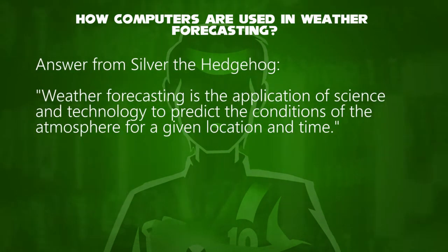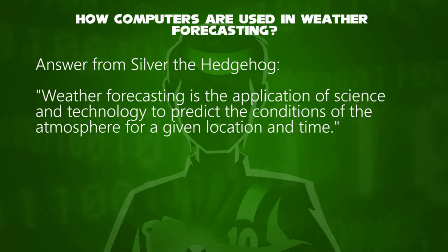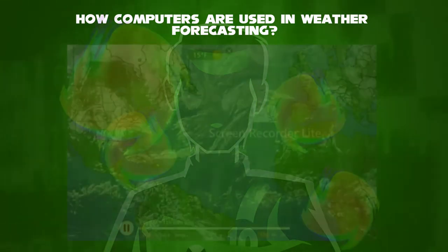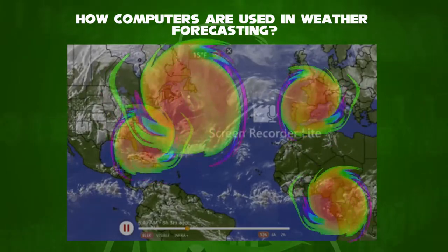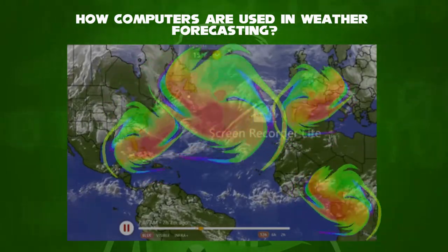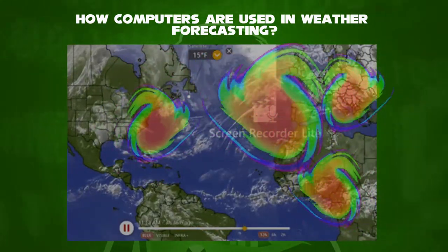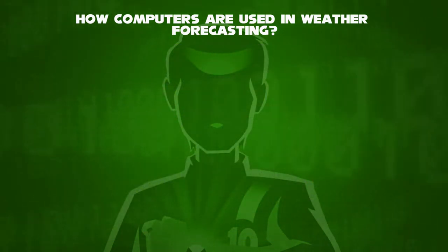Well, weather forecasting is the application of science and technology to predict the conditions of the atmosphere for a given location and time. Okay, now on computer-based models — it uses mathematical models of the atmosphere and oceans to predict the weather based on current weather conditions.